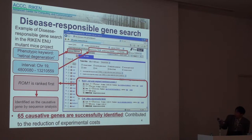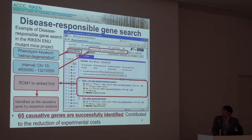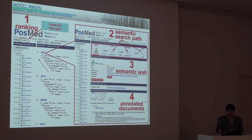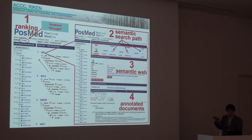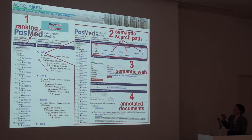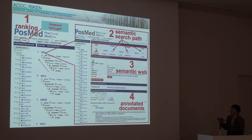So far, 65 causable genes have been successfully identified, and this system contributed to the reduction of experimental costs. GRACE also provides detailed information for each resultant entity, for instance a semantic search path — I will explain this later — and also related semantic web data and annotated documents related to this entity.